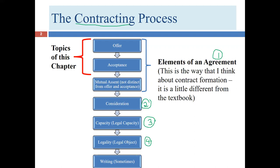We have a fifth element sometimes listed, but it's really not a true element because in most contracts it's not required to be in writing. So we have four elements of contracts. Some of these elements have sub-elements. In the case of agreement, we need two or three things, specifically an offer and an acceptance. In this chapter, chapter three, we're covering offer and acceptance — we covered offer in lecture one, and today we cover acceptance and some additional information about offers.